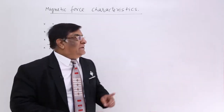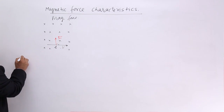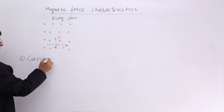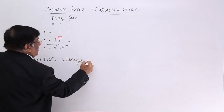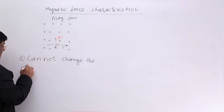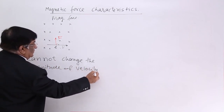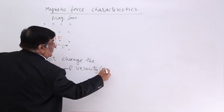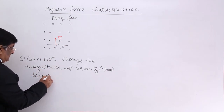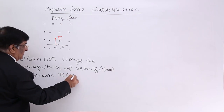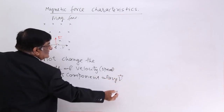If no force is acting in the direction of velocity, then this force cannot change the magnitude of velocity. Magnetic force cannot change the magnitude of velocity — that means speed. It cannot change the speed, because its component along V is 0.